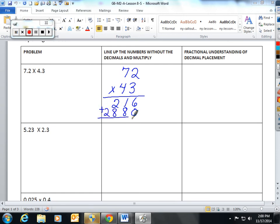When you multiply 72 times 43, you get an answer of 3096. But now we have to figure out where the decimal point goes back into our answer or our product.